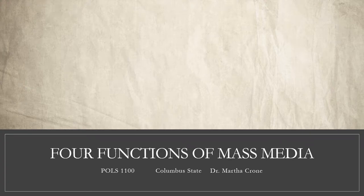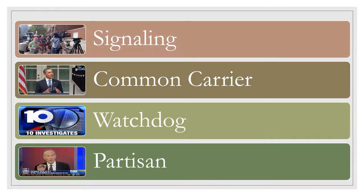Hi, it's Dr. Crone again. In this video we're going to explore the four political functions of the news media. You'll find more information on these functions in your reading assignment for this unit. The four functions are signaling, common carrier, watchdog, and partisan. We'll talk about each one of them in turn and I'll give you examples, both recent and historical, to help aid your understanding.